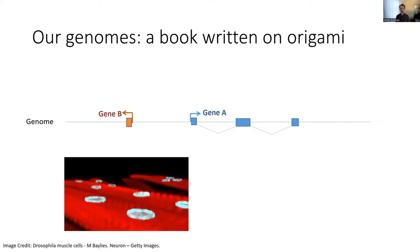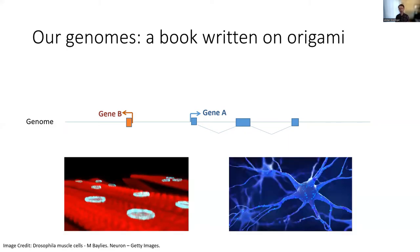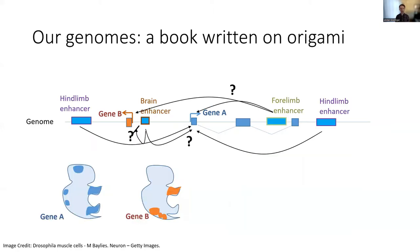A muscle cell and a neuron both have the same genome, but they look different and behave differently because of the distinct combinations and quantities of the products of the different genes deployed in each cell type. These instructions, which are called enhancers, are also encoded in our genome sequence, distributed around the genes they control, sometimes at great distances.